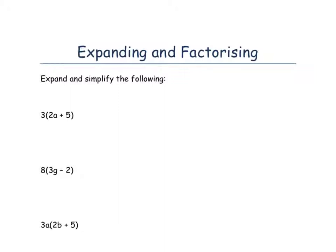It means where we've got a bracket like here in the first question — 3 in bracket 2a plus 5 — it means we want to multiply that 3 by everything inside the bracket, so the 2a and the 5. Now, we're asked to expand and simplify the following. We can't simplify all these questions, but what simplifying means is to collect together any like terms.